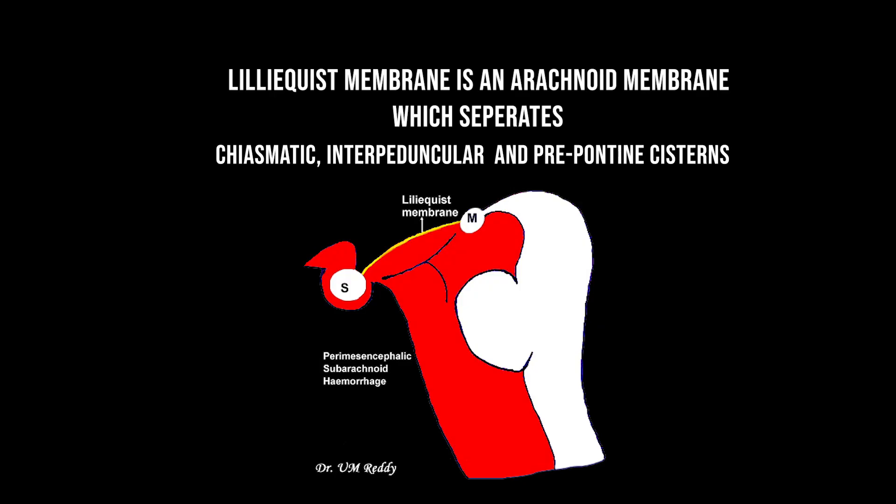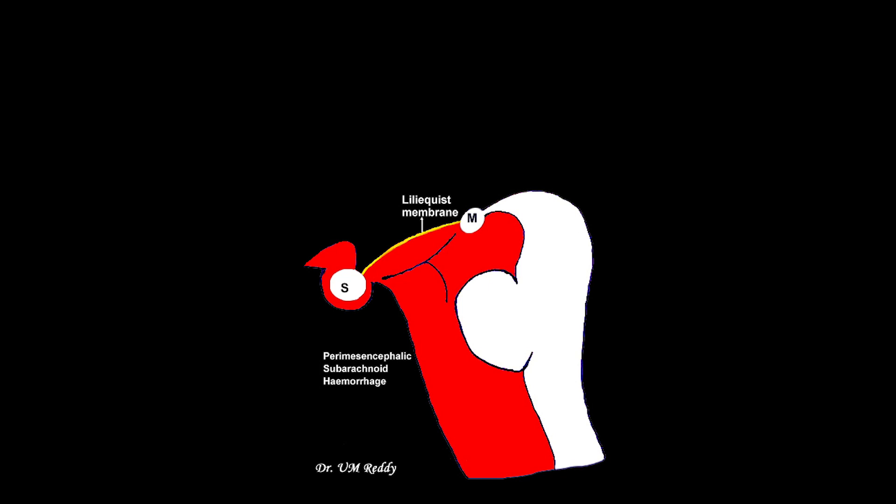The Liliequist membrane is an arachnoid membrane which separates the chiasmatic, interpeduncular, and pre-pontine cisterns. It is hypothesized that the superior extent of the perimesencephalic SAH is limited by the Liliequist membrane.